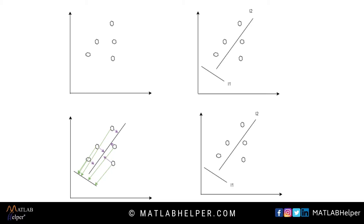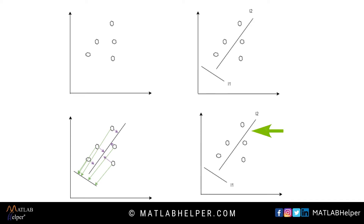For simplicity we will consider two-dimensional space. Here you can see I have mapped data points into two-dimensional space. Now find the line which will cover maximum variance from the dataset. I have assumed two lines, and if we project data points onto those lines, we can say line L2 will cover larger variance. So line L2 is the first principal component, and the line perpendicular to it is the second principal component.